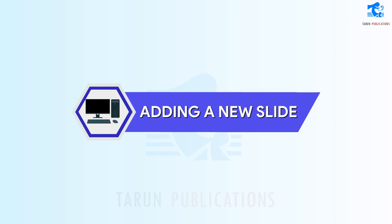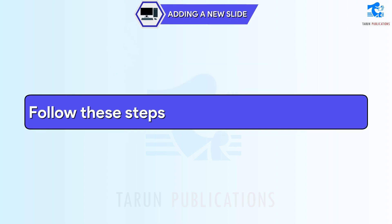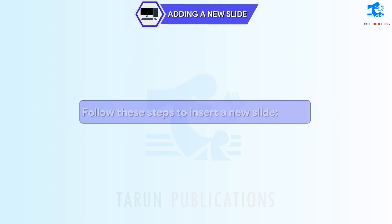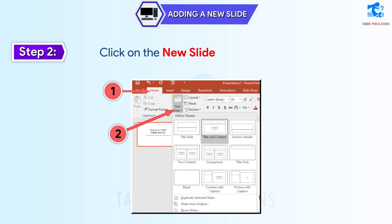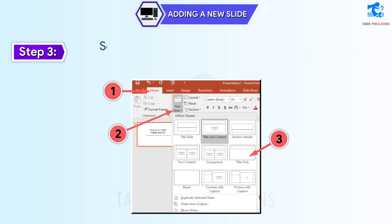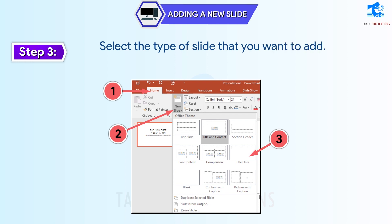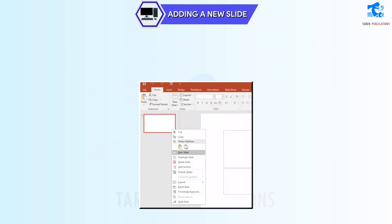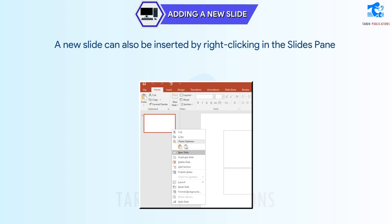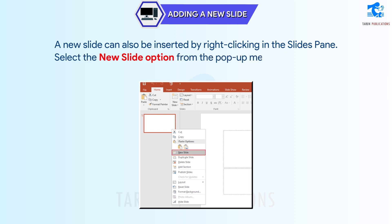Adding a New Slide. Follow these steps to insert a new slide. Step 1: Click on the Home tab. Step 2: Click on the New Slide command in the Slides group. Step 3: Select the type of slide that you want to add. A new slide will be inserted. A new slide can also be inserted by right-clicking in the Slides pane and selecting the New Slide option from the pop-up menu.